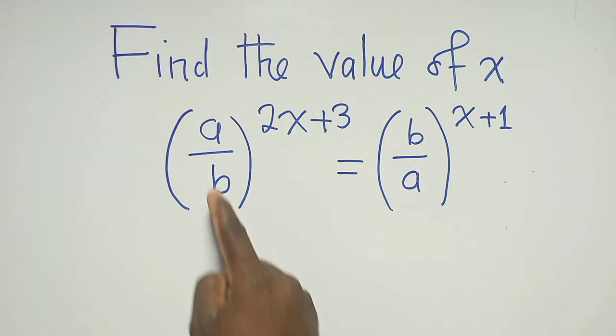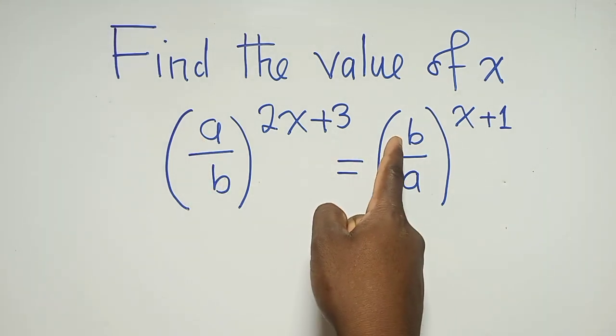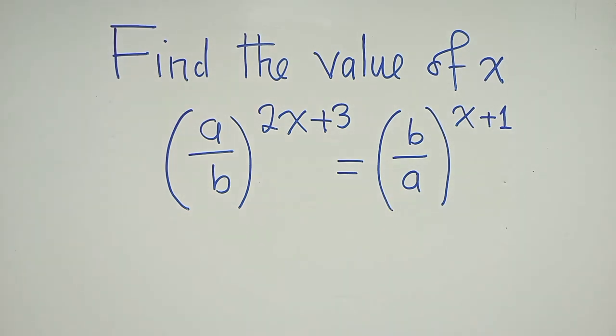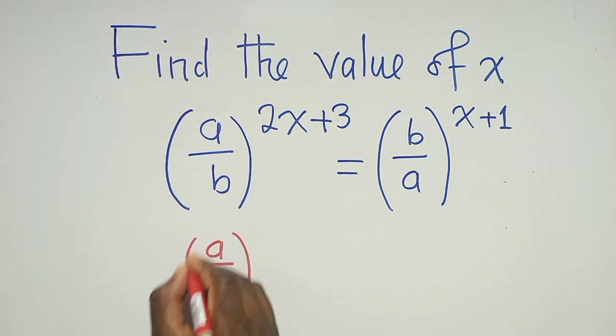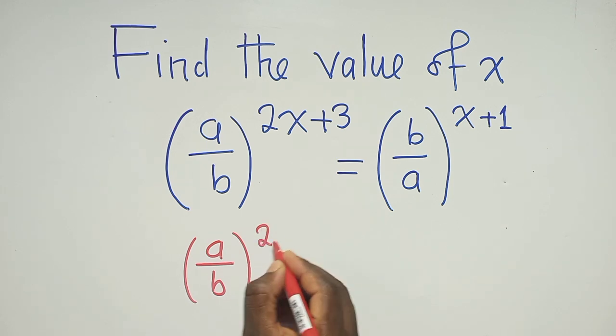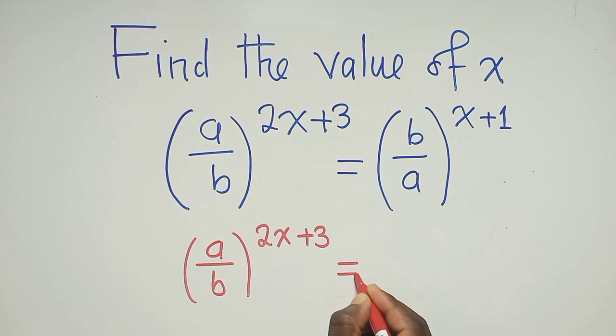Now look at what we have. We've got a over b and b over a on the other side. So we're going to maintain what is here, the right hand side, a over b, and then the power here, 2x plus 3